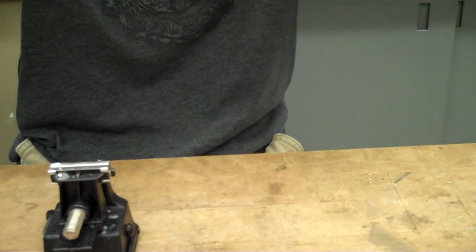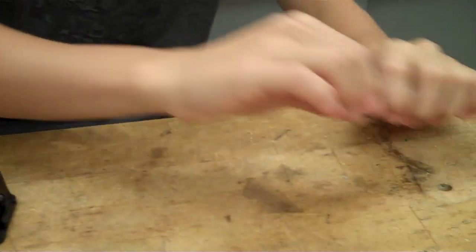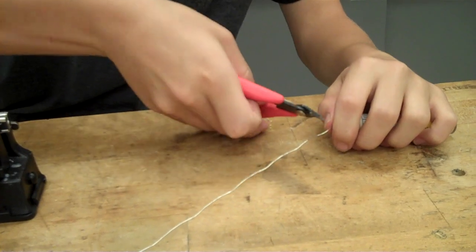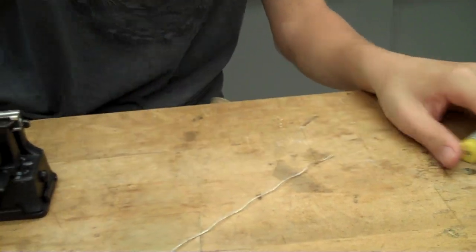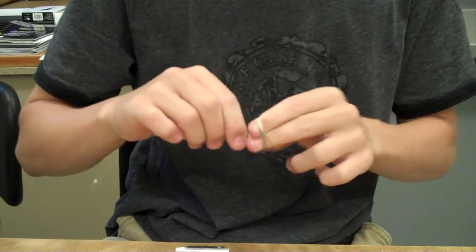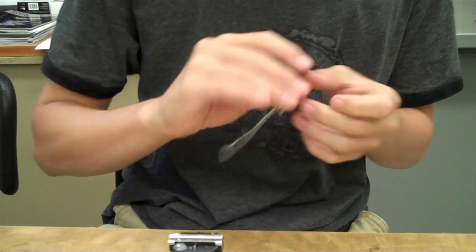Once your safety glasses are on, unwind maybe a foot, a foot and a half of solder, and wrap it around your hand. I find this is a much more manageable way to handle solder than to use a bulky carrying case.